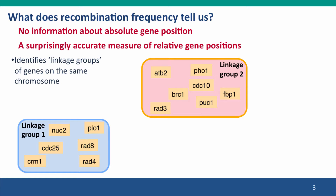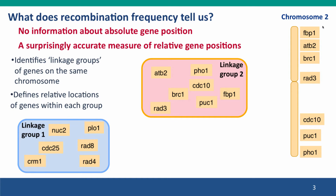Once genes have been mapped to a linkage group, telling us these genes are all on the same chromosome, we can compare the recombination frequencies between them to estimate their relative distances apart, and we can then use that information to construct a genetic map of the chromosome. Even though we don't know what chromosome it is, we know the relative positions of the genes on that chromosome by their recombination frequencies.